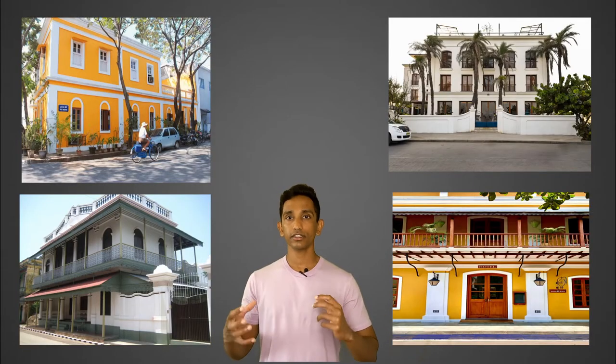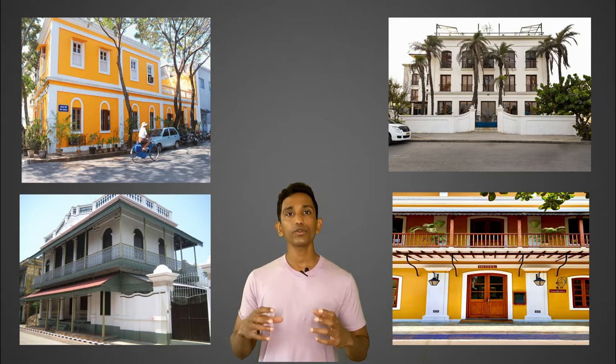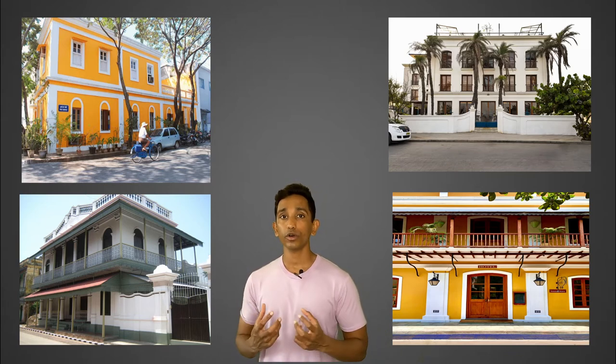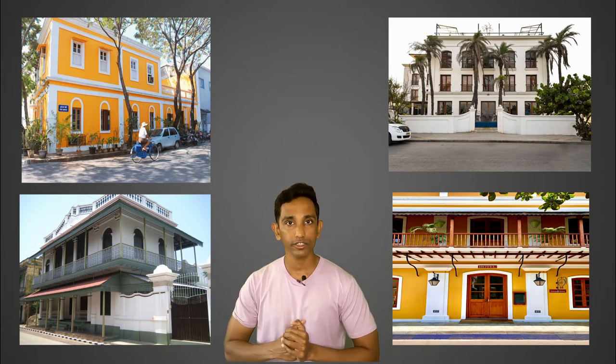The Union Territory also has one Lok Sabha seat. The Union Territory has such a unique mix of French and local influence that a lot of tourists come from all over the world and from India to experience this combination of two cultures. Puducherry is also famous for Sri Aurobindo Ghosh, who was a freedom fighter from Bengal, who later turned into a spiritual guru. He had his own ashram in the region and people from all over the world came to this ashram for spiritual education.